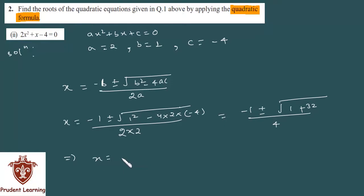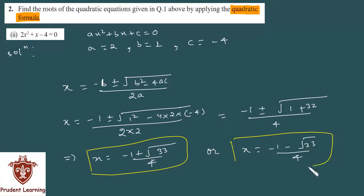x is either minus 1 plus under root of 32 plus 1 is 33, over 4, or x is equal to minus 1 minus under root of 33 over 4. So these are the two roots. These are the same roots we got in the first question by the method of completing the squares. Let's see the next section,